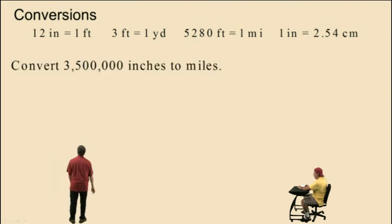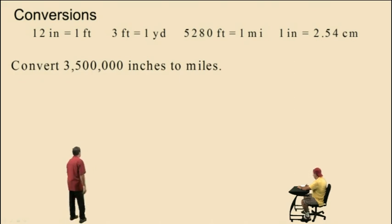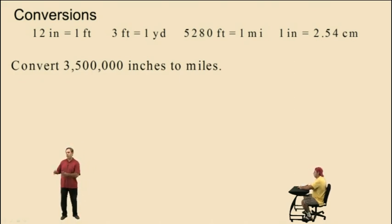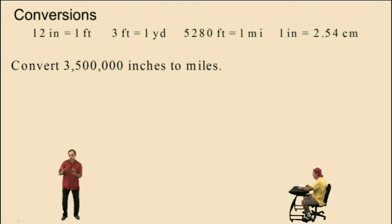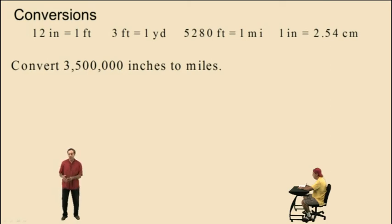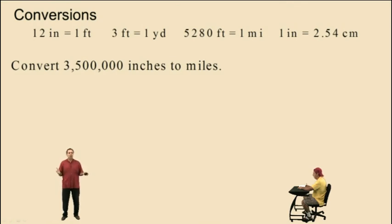Here's our first problem: convert 3,500,000 inches to miles. Conversion problems involve taking a given quantity and then multiplying it by conversion factors. These conversion factors are sometimes called unit fractions. The conversion factors are arranged in such a way that it takes your given dimension and converts it to a desired dimension. It's like putting together a puzzle, and if you think of it that way, it's actually fun.